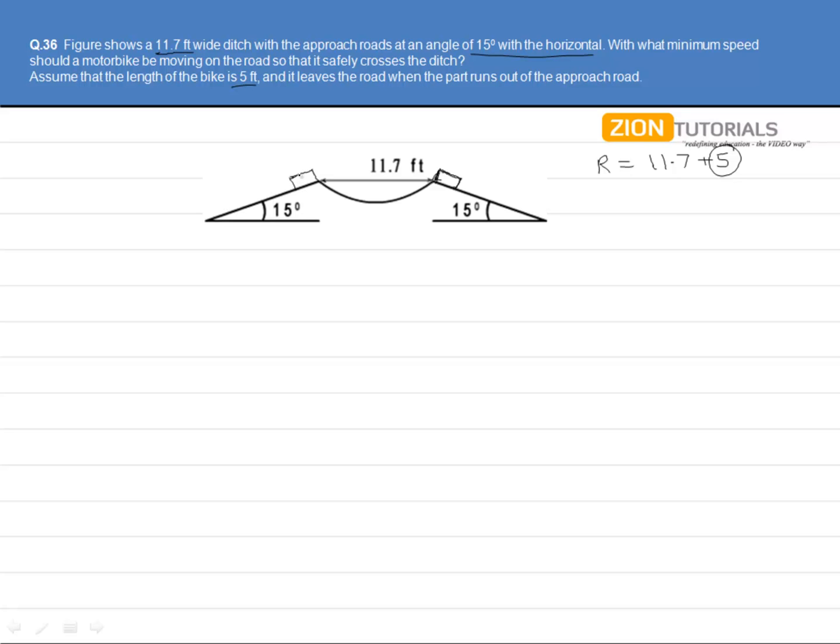Also, you will not be adding 5 plus 5, that is 10, in the horizontal range. Why? Because consider a single point. Let us see this point. It will be going from here to here.